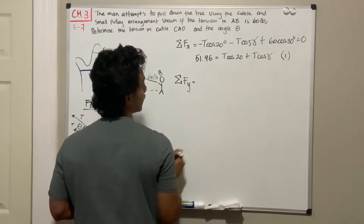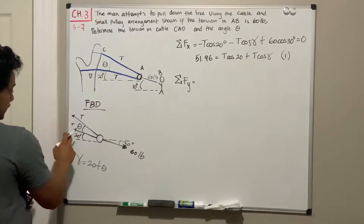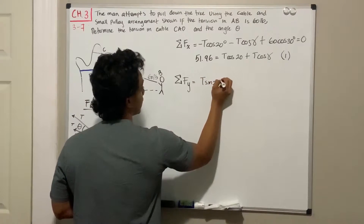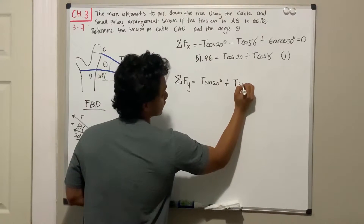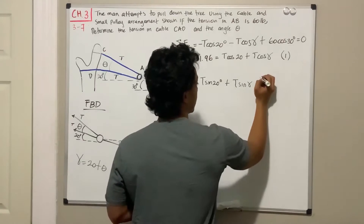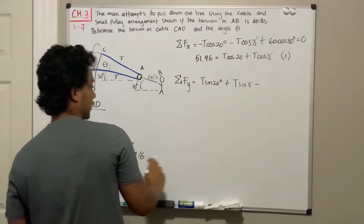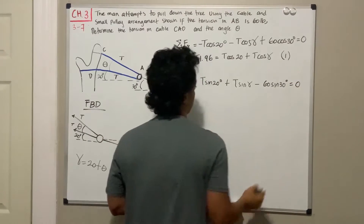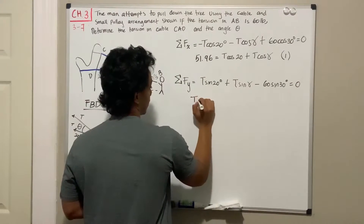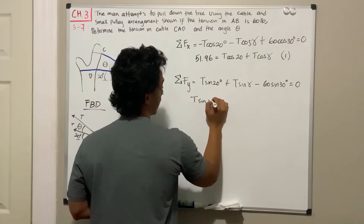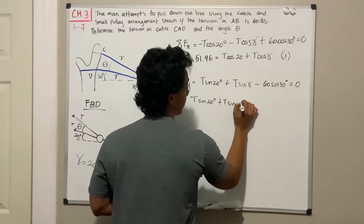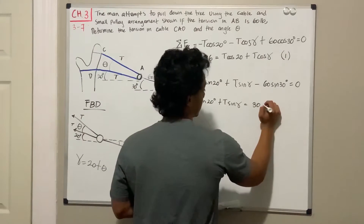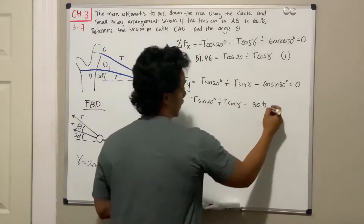For the sum of forces in the y-direction, we have T sine of 20 degrees going up, plus T sine of gamma, minus 60 sine of 30, equal to zero. Cleaning it up: T sine of 20 + T sine of gamma = 60 sine of 30, which equals 30 pounds. That is our second equation.